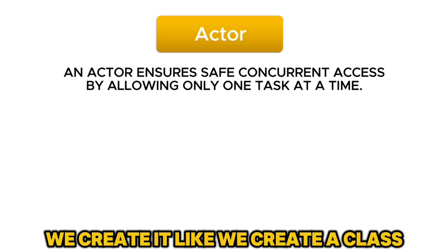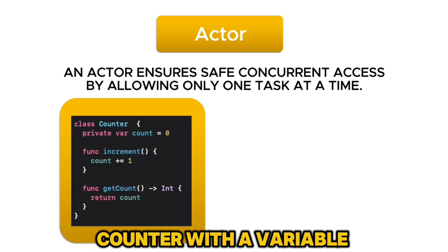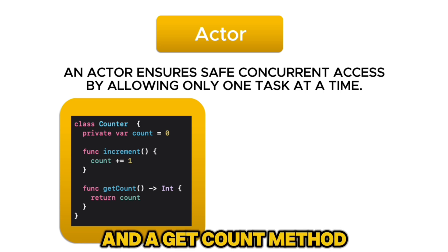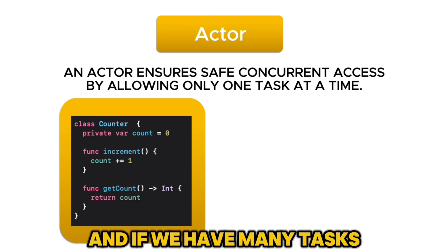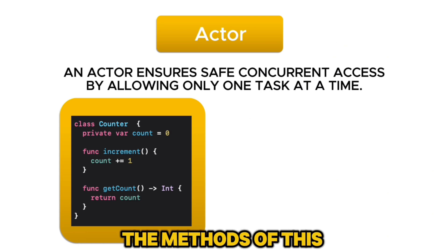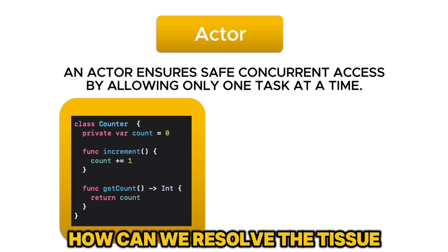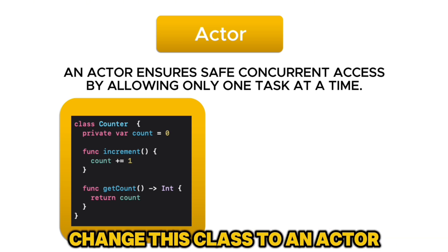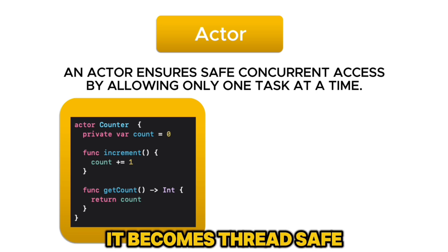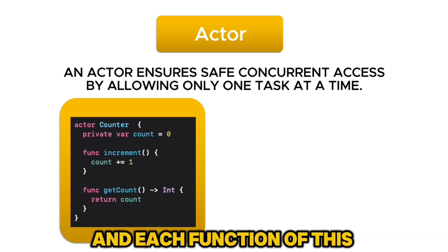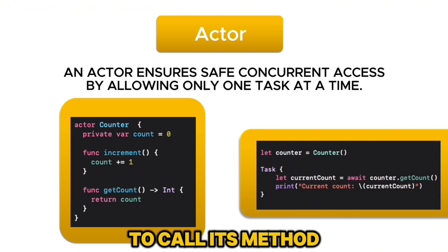Creating an actor is simple — we create it like we create a class. Here we have a simple class counter with a variable count, an increment method, and a get count method. This class is not thread safe, and if we have many tasks which might try to access methods of this class at the same time, then we can run into a race condition. To resolve that, all we have to do is change this class to an actor. And once this becomes an actor, it becomes thread safe, and each function of this class will become asynchronous, which means you will have to use the await keyword to call its methods.